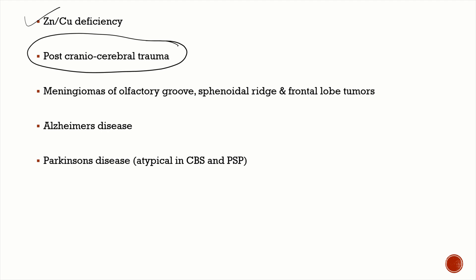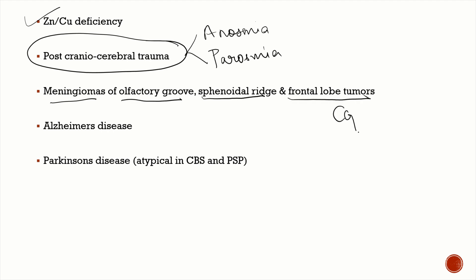Vitamin deficiencies are very important causes of anosmia — remember vitamin B12, B6, and vitamin A, as well as zinc and copper deficiency. Another important common cause is head injury, which can cause both anosmia as well as parosmia. Tumors involving the orbitofrontal surface of the brain — such as meningiomas of the olfactory groove or the sphenoid ridge — and frontal lobe tumors, especially gliomas, can cause unilateral anosmia.